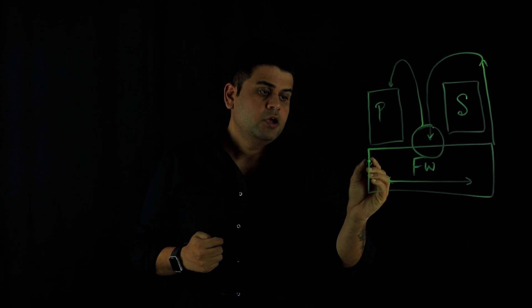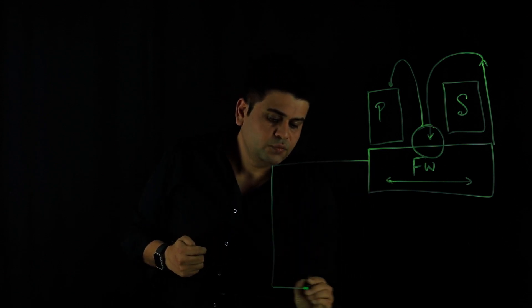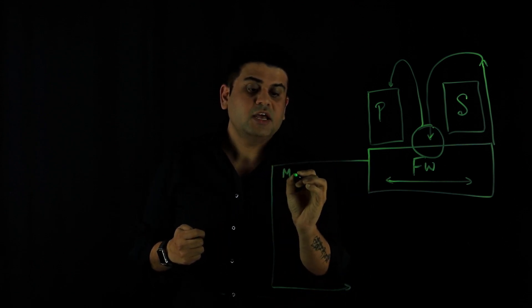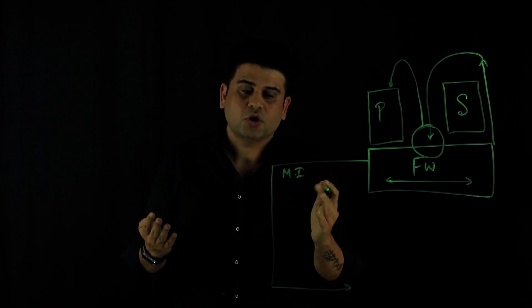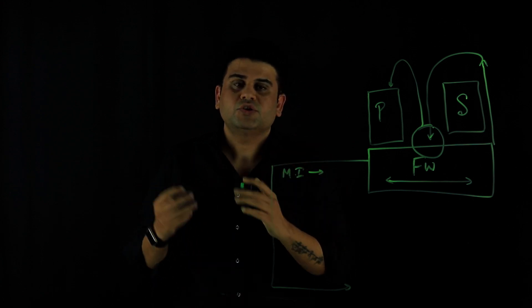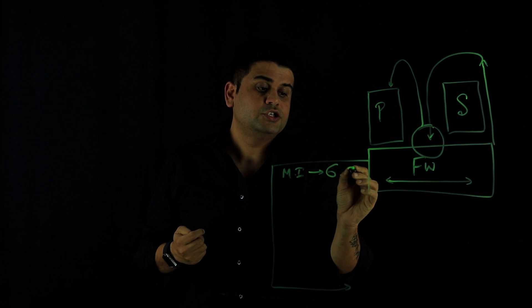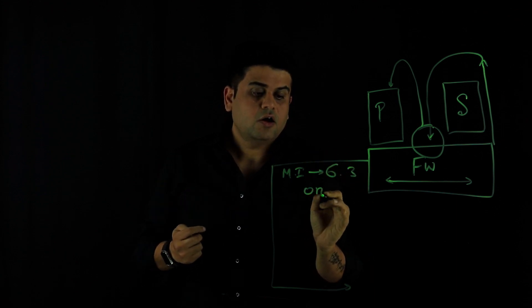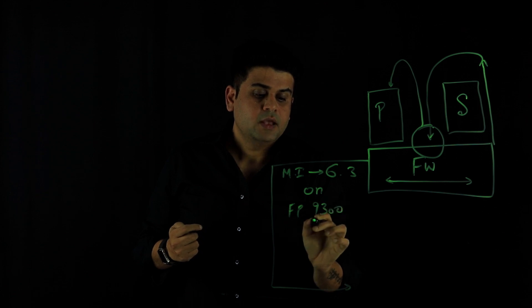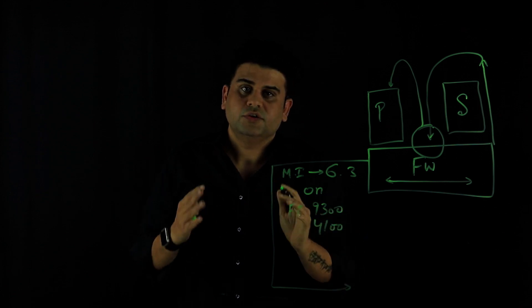In order to solve this problem, we have created an innovative solution which is known as multi-instance or MI per shot and this feature is available from FTD version 6.3 on Firepower 9300 and 4100 series appliances.